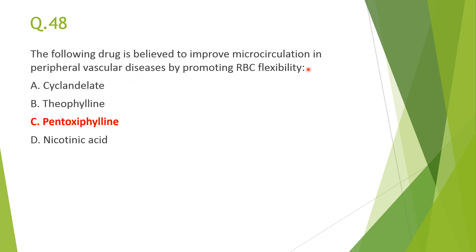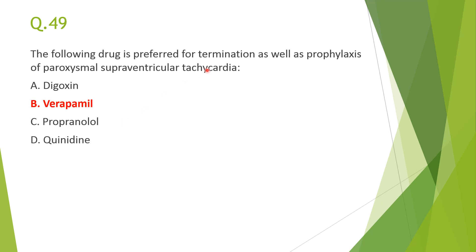Next: the drug believed to improve microcirculation in peripheral vascular diseases by promoting RBC flexibility is C, pentoxifylline. It is called a rheological modifier, promotes RBC flexibility, and is useful in intermittent claudication or peripheral vascular diseases to reduce claudication-related pain.